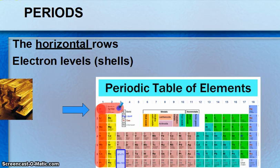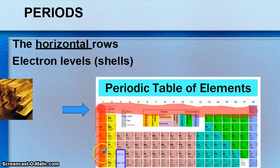Period one goes across the horizontal rows. Everything in period one has one electron shell all the way down to seven. Francium all the way across all have seven electron levels or shells. So those are the periods.